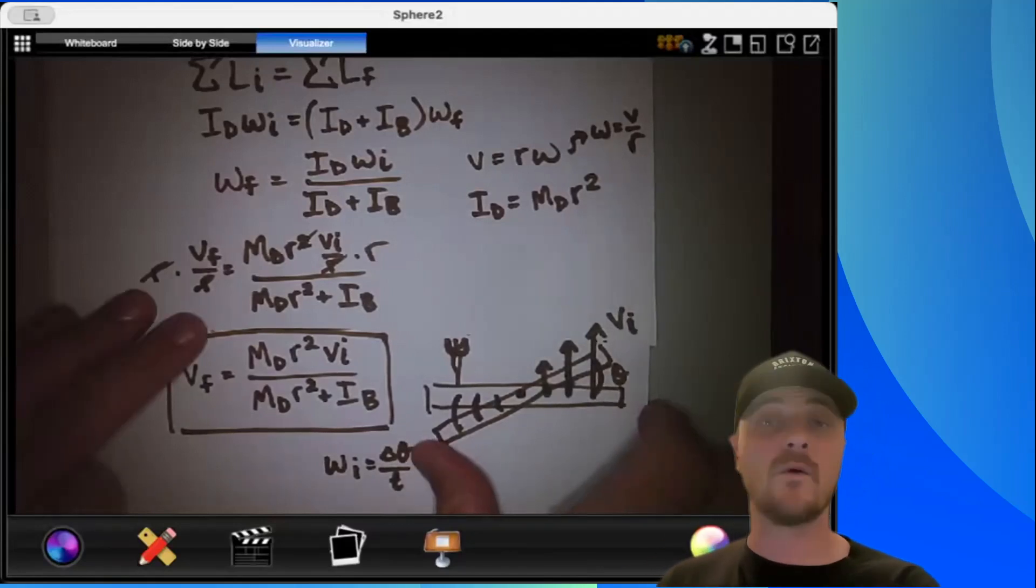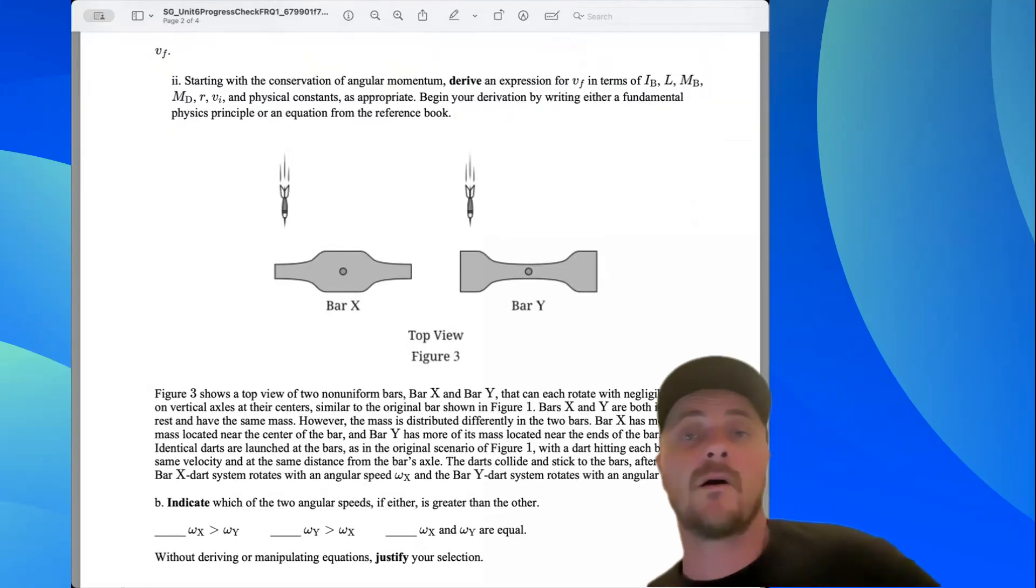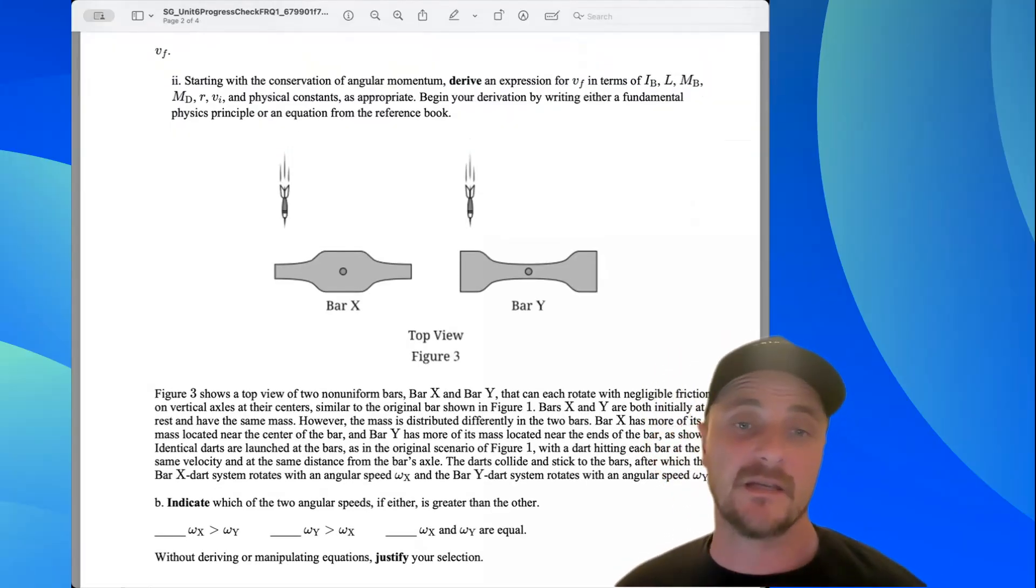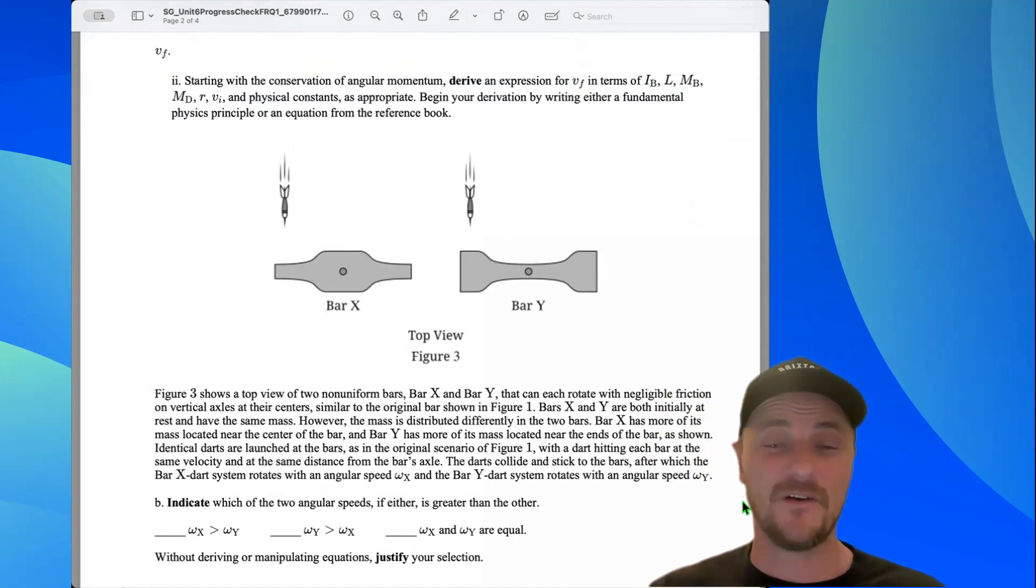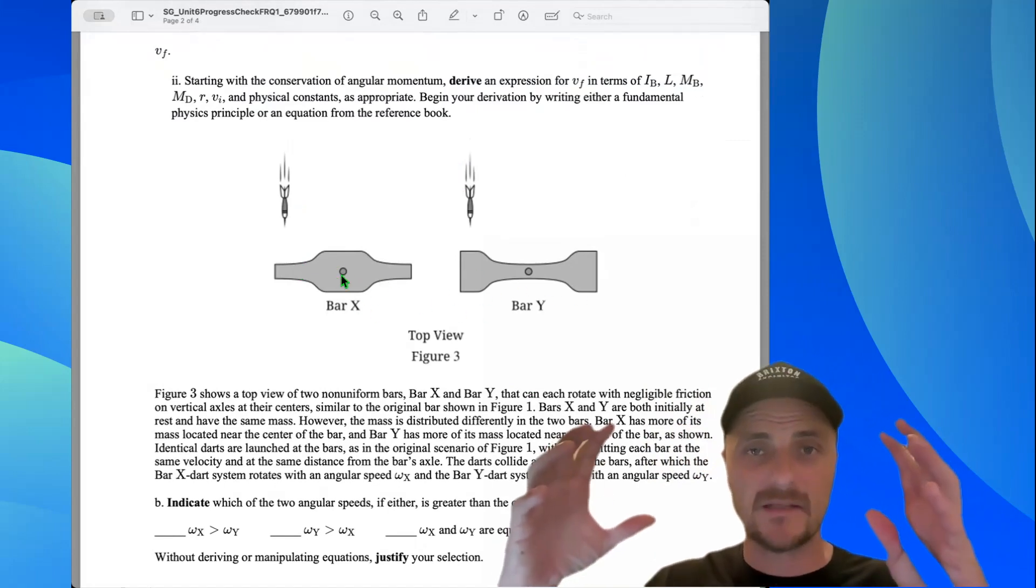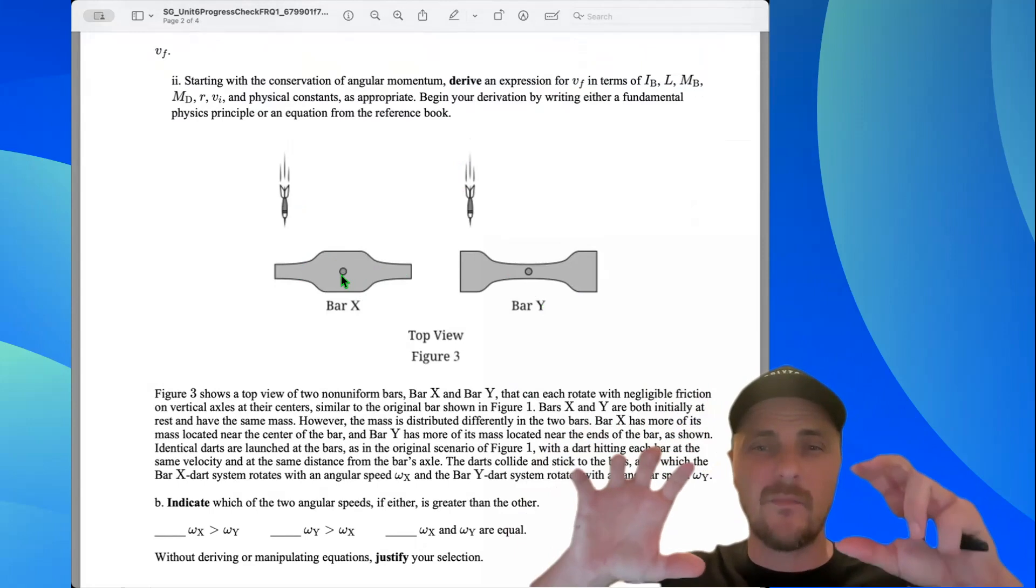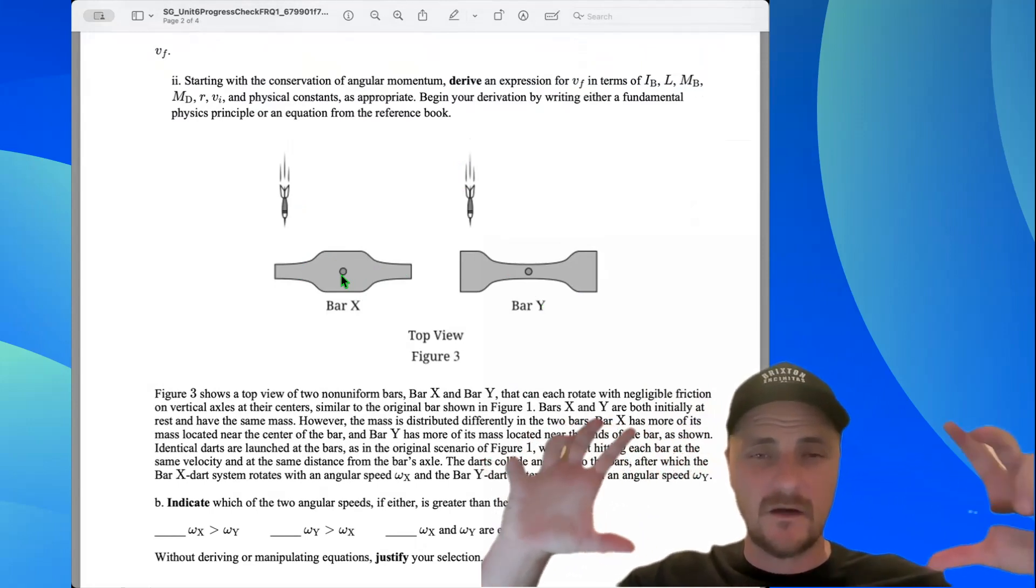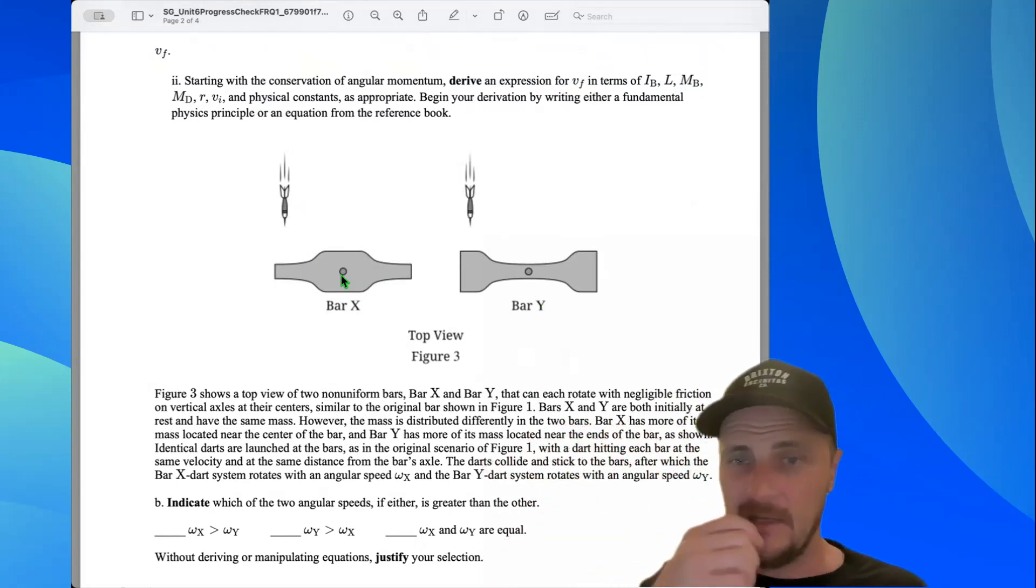Let's go on to part B. Man, that is a ton of words. I don't want to read it. Pause it, read it for yourself. But we have the same dart traveling with the same initial velocity coming in at both of these bars. This one clearly has more of its mass concentrated to the center. Bar Y has more of its mass concentrated to the outside, and that's what you can see. But let's read this last line. The darts collide and stick to the bars, after which the bar X dart system rotates with an angular speed omega x, and the bar Y dart system rotates with an angular speed omega y.